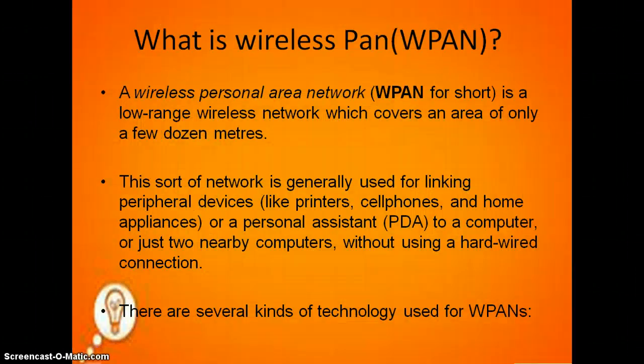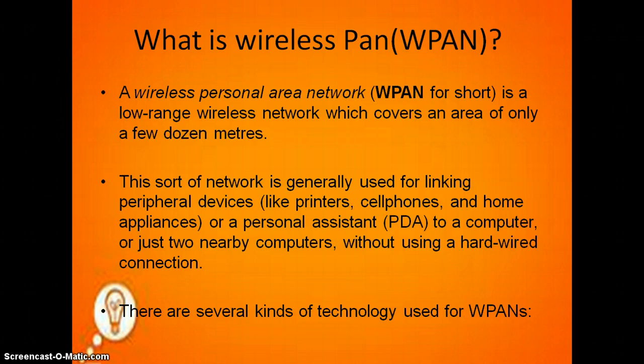What is wireless PAN? A wireless personal area network is a low range wireless network which covers an area of only a few dozen meters. This sort of network is generally used for linking peripheral devices like printers, cell phones, and home appliances, or a personal digital assistant (PDA) to a computer, or just two nearby computers without using a hardwired connection.